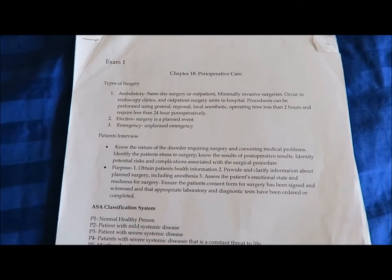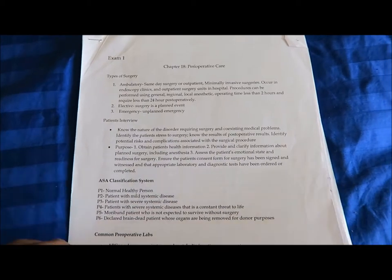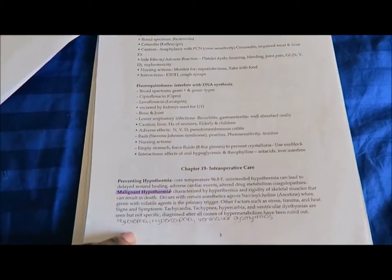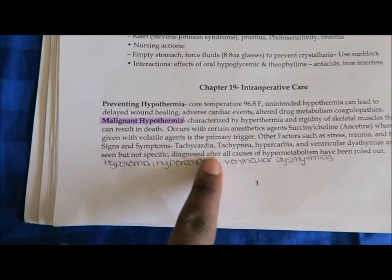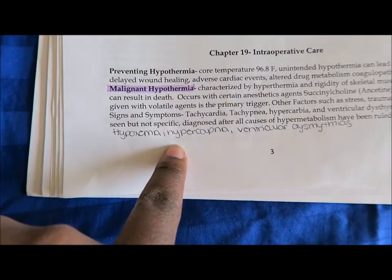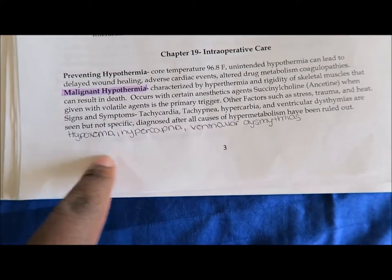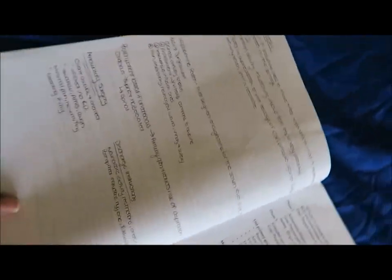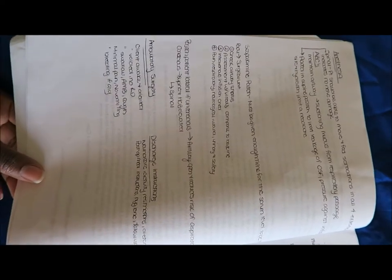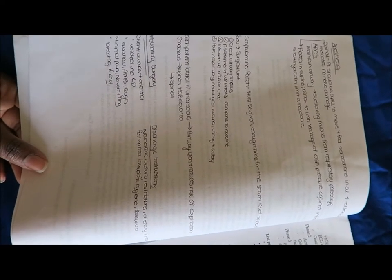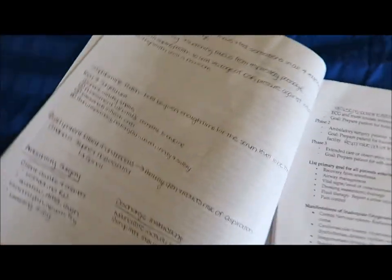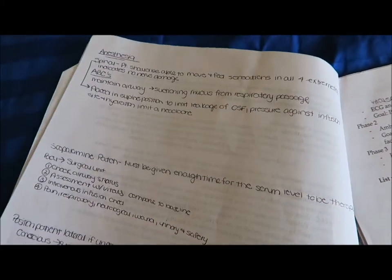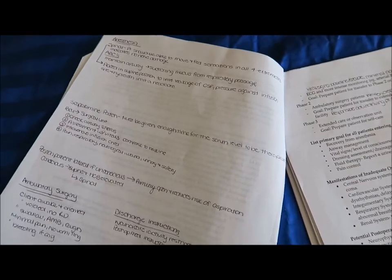Here's my exam one review packet that I made. It was 28 pages and just covered everything that was pretty much on our syllabus and things that I read. Do you guys see here, I have malignant hypothermia and then underneath of it I have signs and symptoms of it: hypoxemia, hypercapnia, ventricular dysrhythmias. These were things that I did not possibly read about or understand, so I take notes on it.